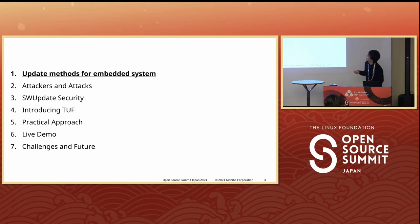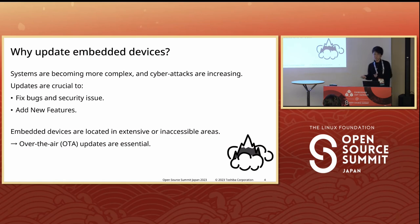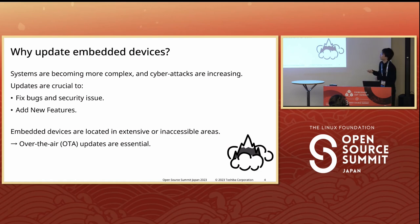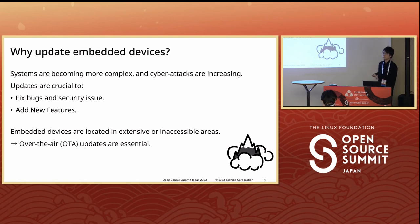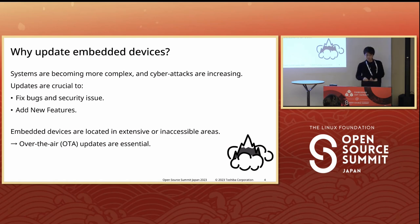First is the update method for embedded systems. Why do embedded devices need updates? As is well known, the systems of embedded devices are becoming more complex. At the same time, cybersecurity threats are increasing. There are growing needs to fix bugs and fix security issues. As noted in today's keynote session, any bugs increasingly become security issues. Additionally, there are high demands for adding new features after these devices are released. From this perspective, updating embedded devices is crucial.